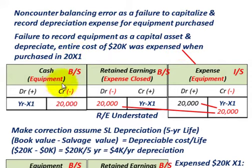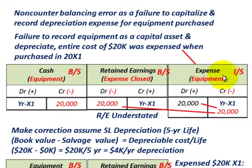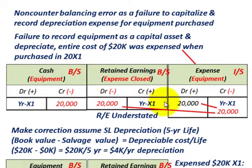What we did was credit our cash account and reduce it by $20,000 for the purchase price of the equipment, then debit the expense account on our income statement for $20,000. What we should have done is set this up as a capital asset and taken depreciation per year, recognizing that as expense on the income statement rather than expensing the entire cost at once.